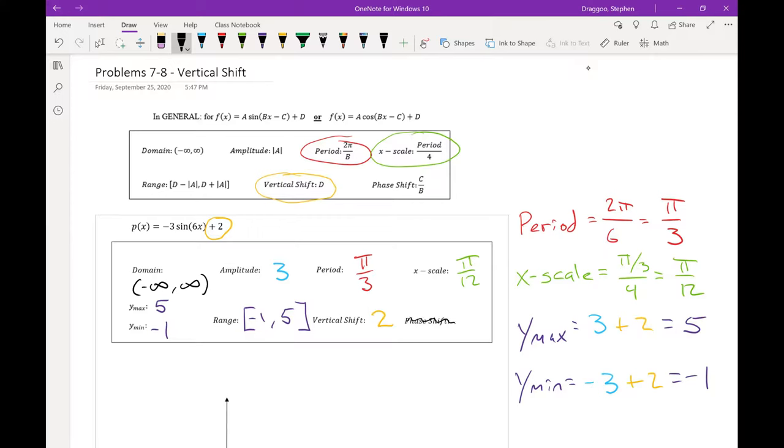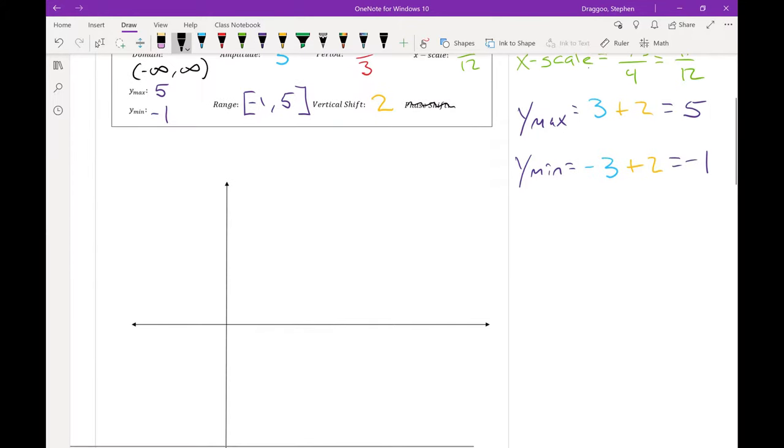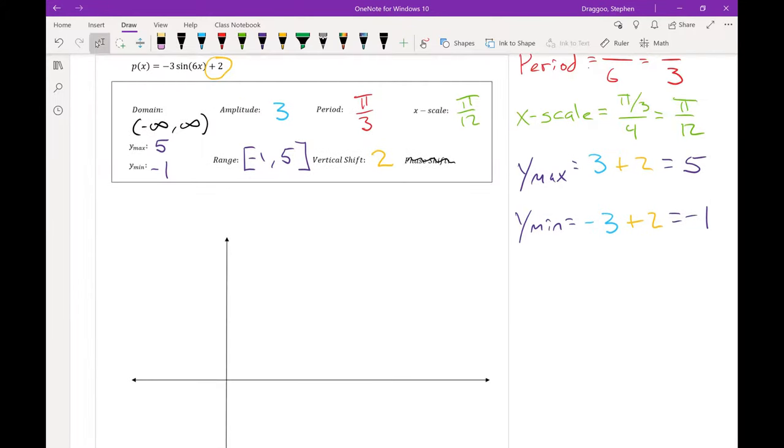Still no phase shift just yet. And the rest should play out much the same. So I'm going to mark my 4 tick marks along the x axis. And I'm going to count by my x scale, π over 12, 2π over 12, 3π over 12, and 4π over 12.